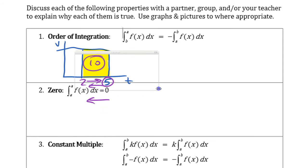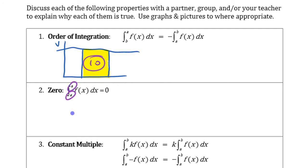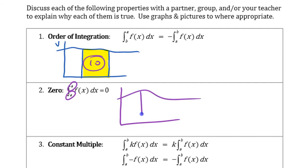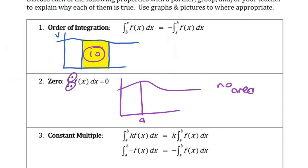The second one is a little more obvious. If you go from a number to the same number — those numbers are the same — you have some function here. From A to A, if this is A, there's no area, right? There's no change in the variable, so how can there be any net gain?